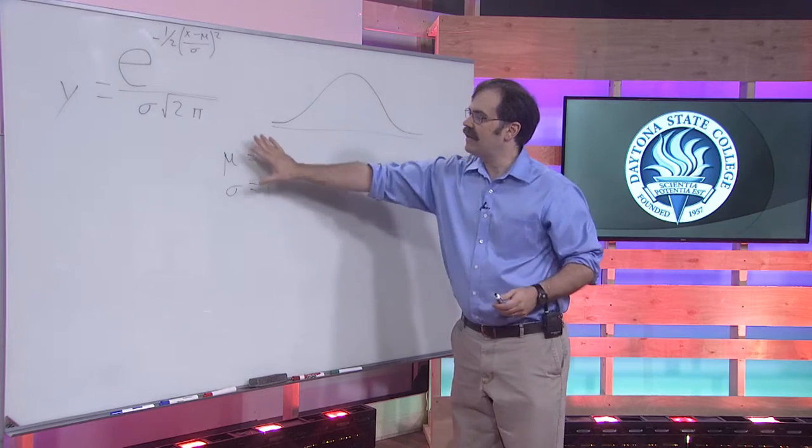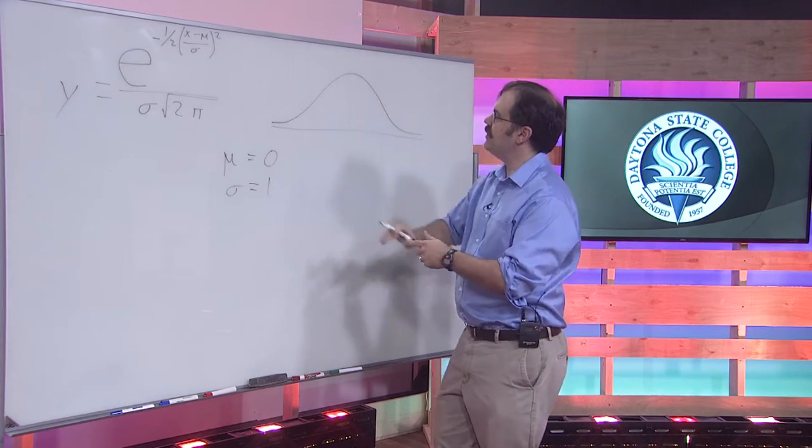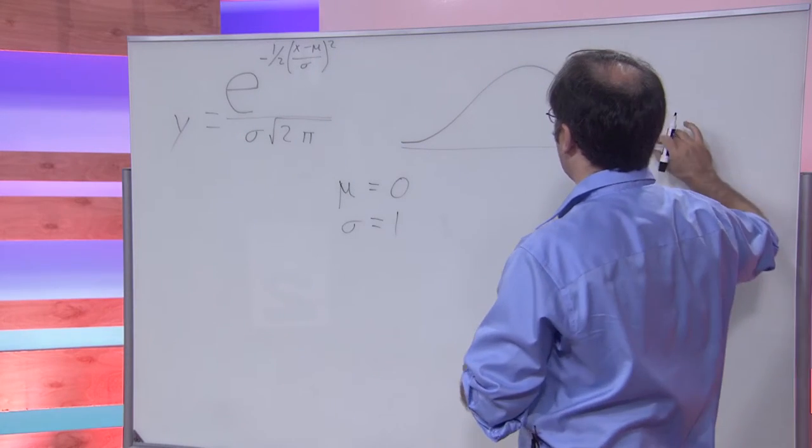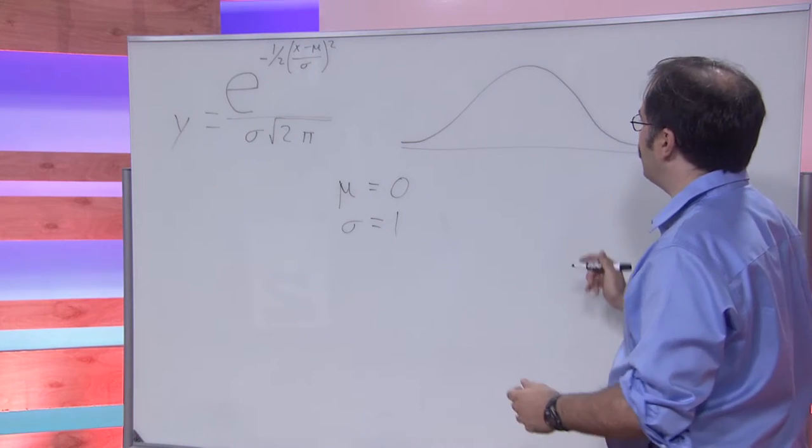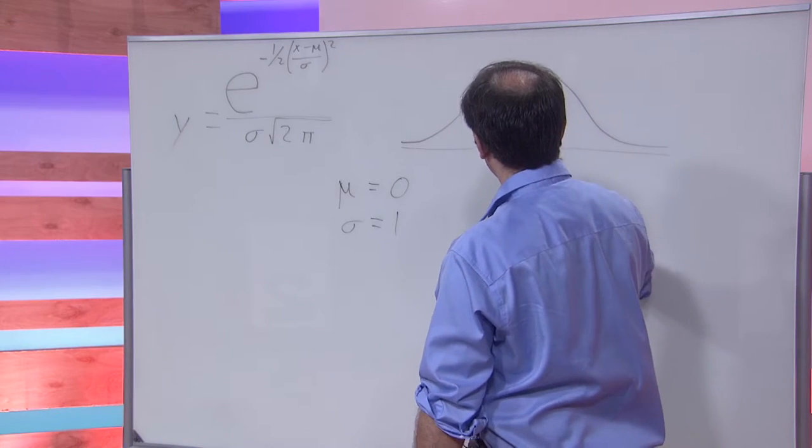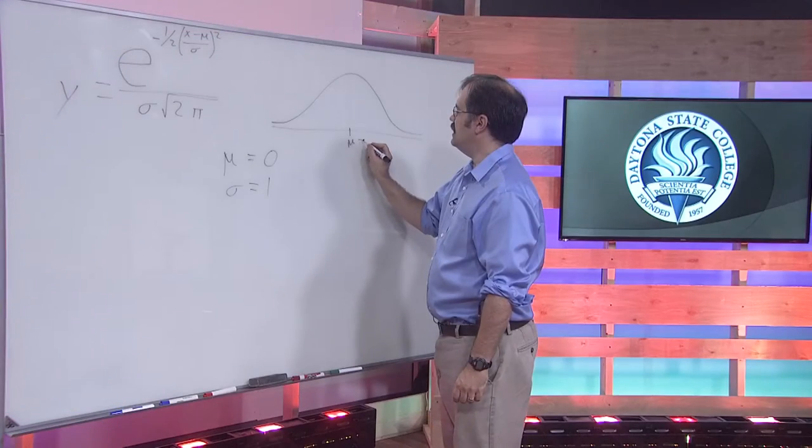And when you graph this shape, what you get is something that looks about like this. It's that bell curve that we talked about. And in the middle, the mean is 0.